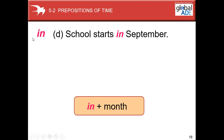Another one — you can use preposition 'in'. Letter D: school starts in September. School starts in September. So we use 'in' plus month. In January, in February, March, April, May, June — something like this. So you can use 'in' before a month.